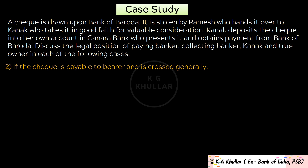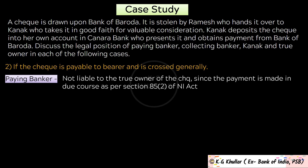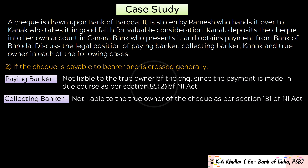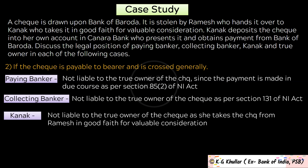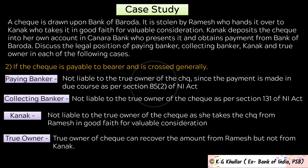The second case is if the cheque is payable to bearer and is crossed generally. The only difference here is that the cheque is crossed generally. In the case of general crossing, the paying banker will pay money to any banker, so the payee receives payment only through a bank account and not over the counter. Here also the paying banker, Bank of Baroda, is not liable to the true owner since payment was made in due course as per section 85 of the Negotiable Instruments Act. Similarly, the collecting banker is not liable as per section 131, Kanak is not liable as she took the cheque in good faith for valuable consideration, and the true owner can recover only from Ramesh.